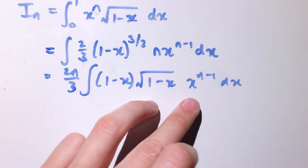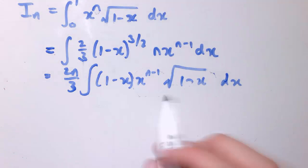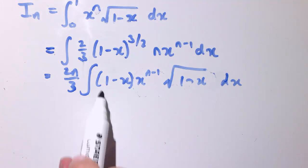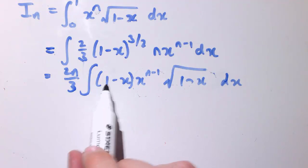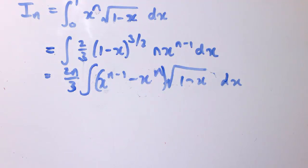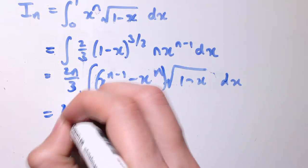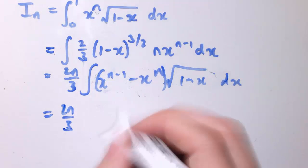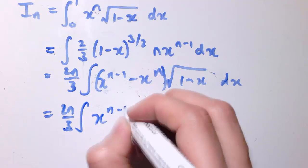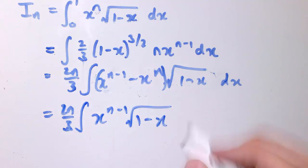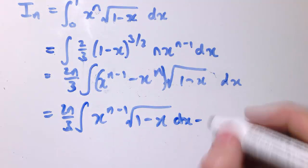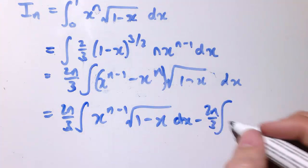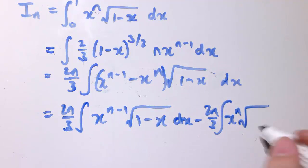So if I just switch these two terms around, it may be more obvious how to proceed now, because this 1 minus, I've got 1 minus x times x to the n minus 1, so that's x to the n minus 1 minus x to the n. So I could write this as 2n over 3 times the integral of x to the n minus 1 root 1 minus x dx minus 2n over 3 times the integral of x to the n root 1 minus x dx.